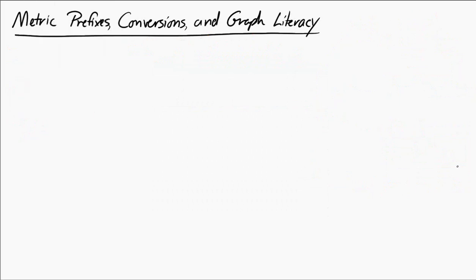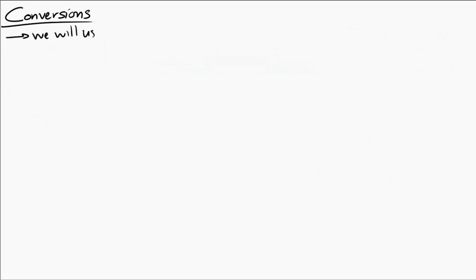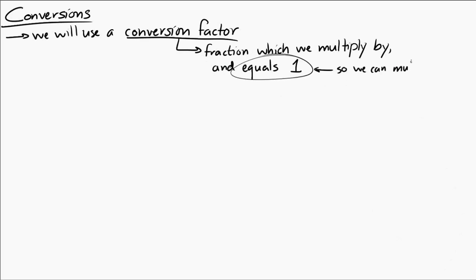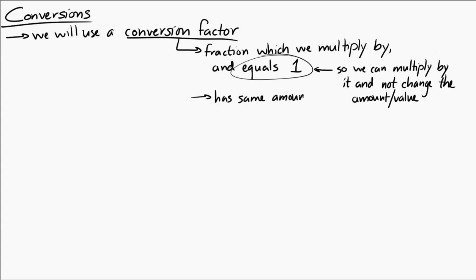Metric prefixes show up a lot when we do conversions. When we do conversions in this class, we're going to use something called a conversion factor. A conversion factor is a fraction which we multiply by, and it's a special fraction that equals 1. We can multiply by it without changing anything because it equals 1. The reason it equals 1 is because we have the same amount on the top and bottom of the fraction, but with different units on top and bottom.